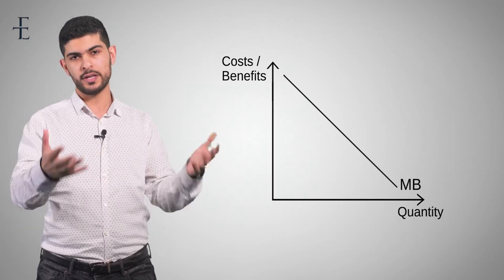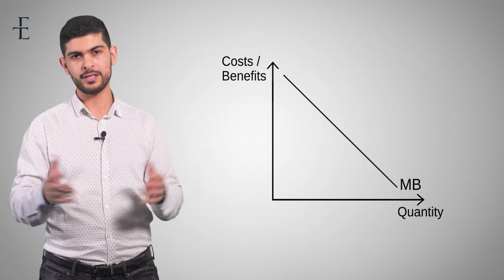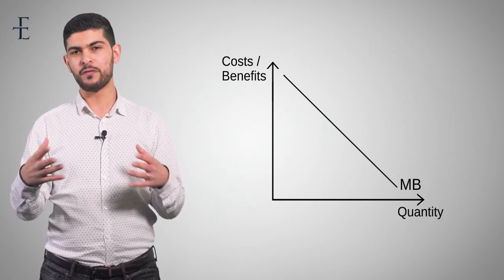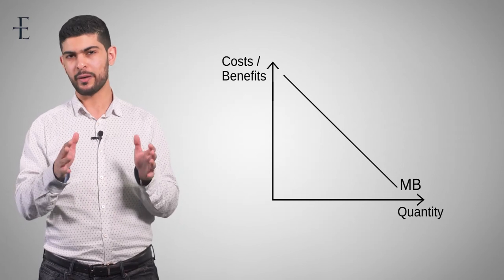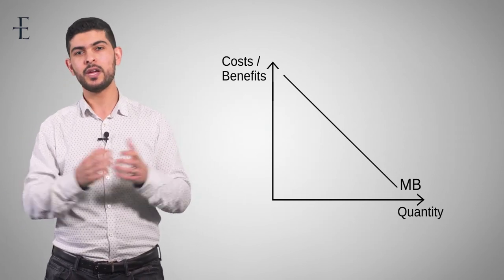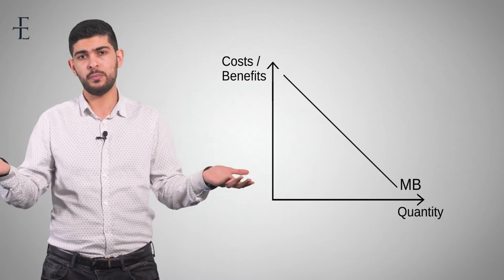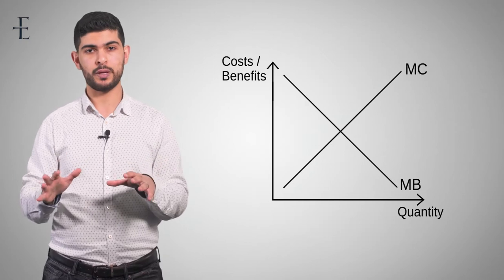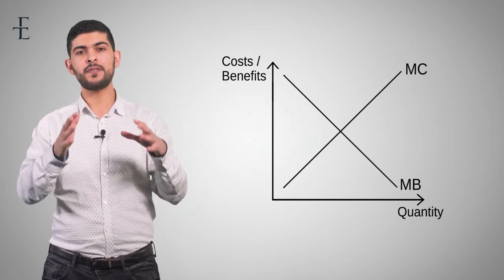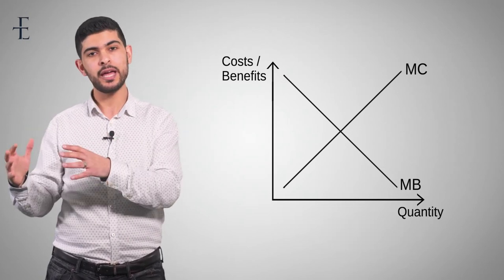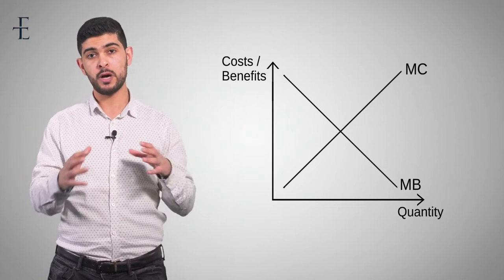It's a bit like going to a buffet — the first meal you love it, the second time you go up you like it but not as much, and by the third and fourth time you're just trying to save money. Marginal benefits are therefore downward sloping. And if marginal benefits are downward sloping, it follows that marginal costs must be the opposite — they are upward sloping. Now let's draw the actual diagram, with that understanding of what marginal costs and marginal benefits actually are.